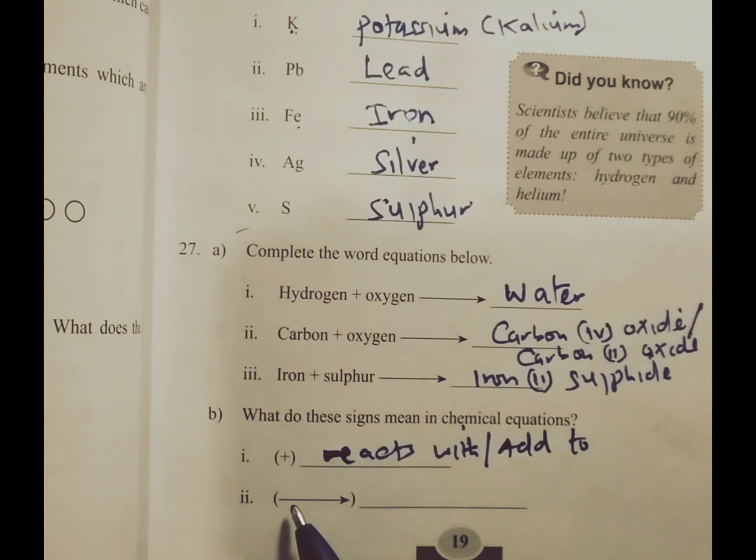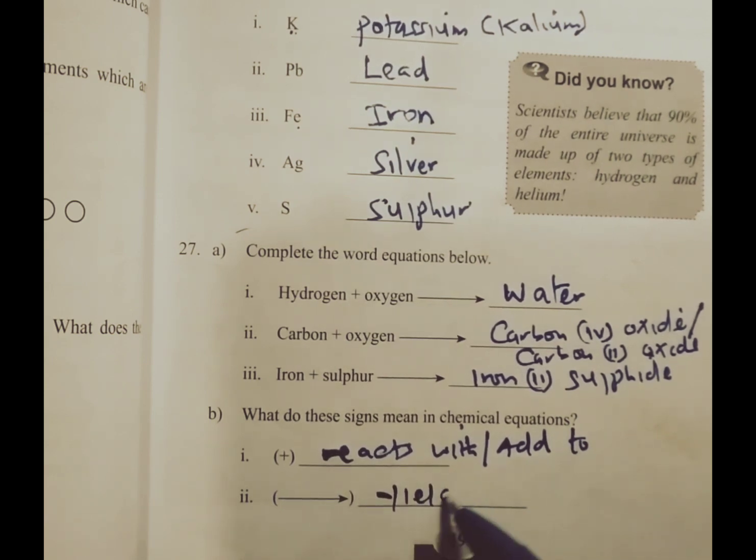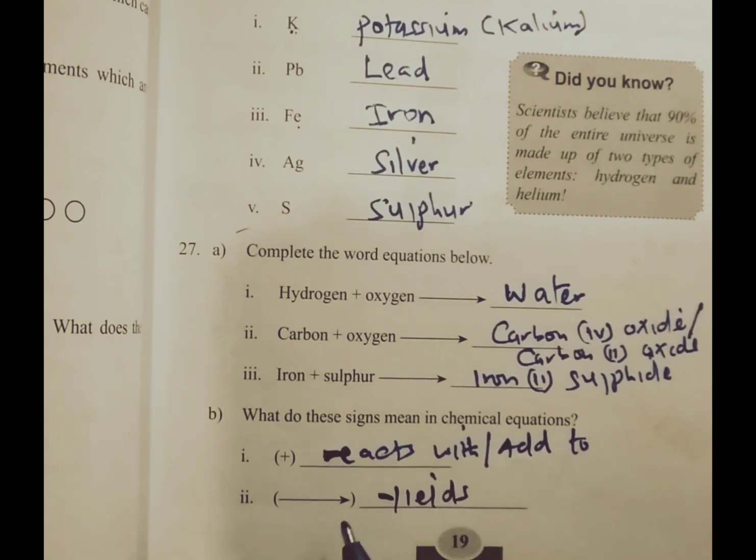Then of course we have the arrow symbol. This symbol means yields. In any given chemical equation, this is a sign that points towards the products.